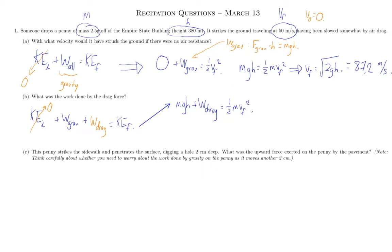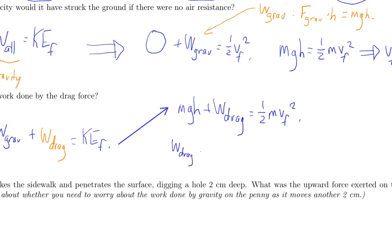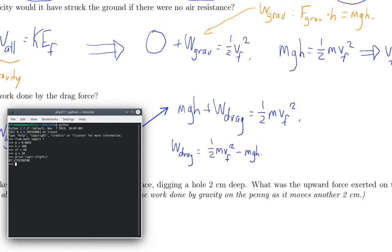So that means that we can just solve for the work done by drag. The work done by drag is one-half mvf squared minus mgh. This is kind of what you'd expect. One-half mv squared is the kinetic energy you actually have at the bottom, and mgh is the work done by gravity. If there's no air drag, as we saw in part a, those would be the same, but they're not the same, and the work done by drag is going to be the difference between the kinetic energy at the end that you actually have and the kinetic energy at the end that you would expect if there's no drag, which is just the work done by gravity.